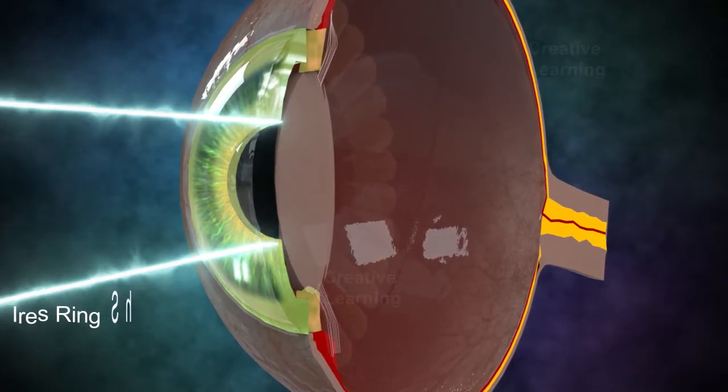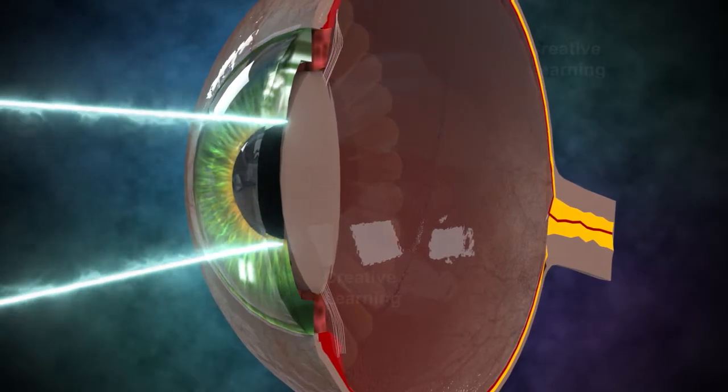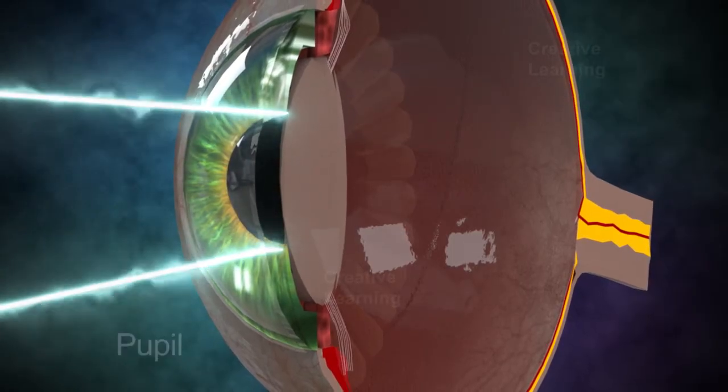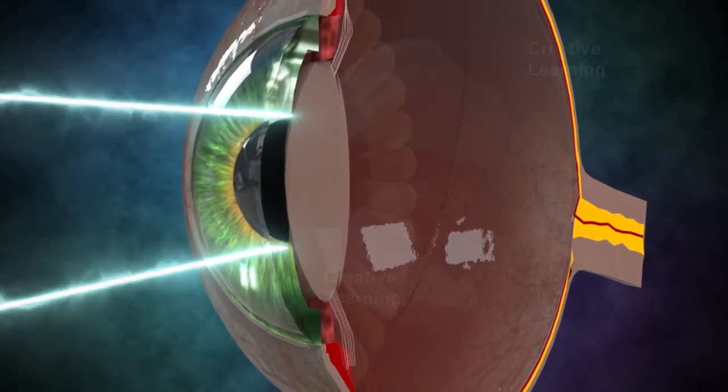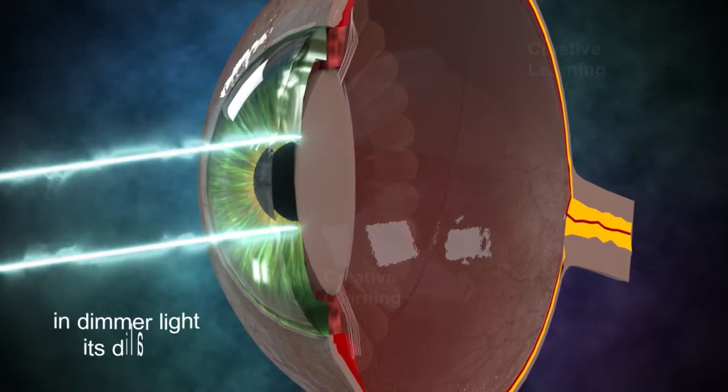Light passes through the iris, a ring-shaped membrane located behind the cornea. The opening of the iris is called the pupil. Changes in the intensity of incoming light change the size of the pupil. In brighter light the pupil constricts, and in dimmer light it dilates.